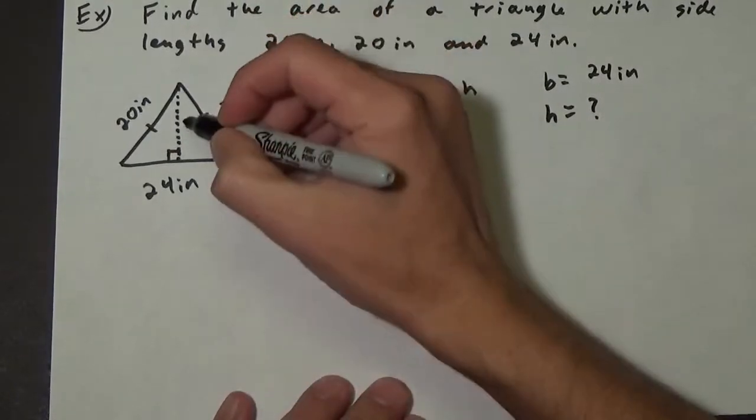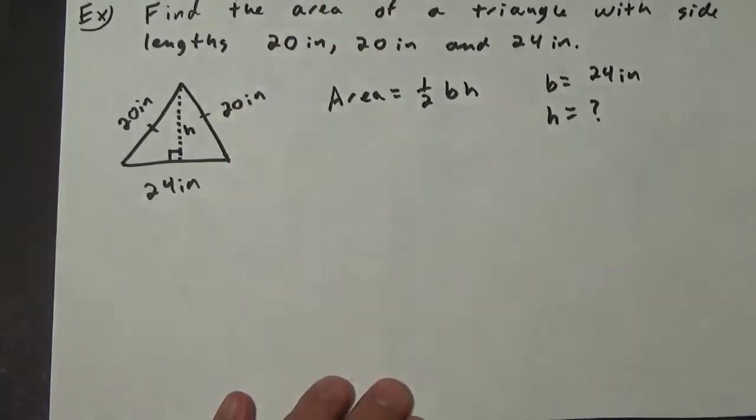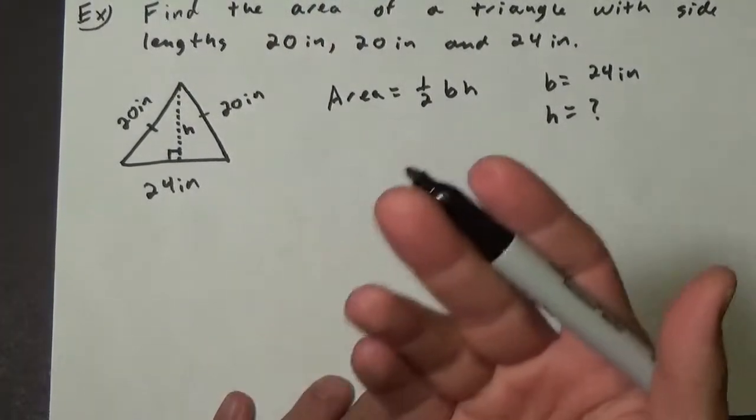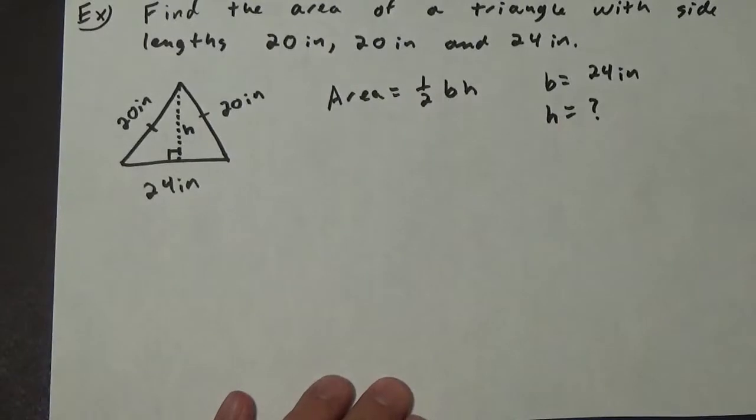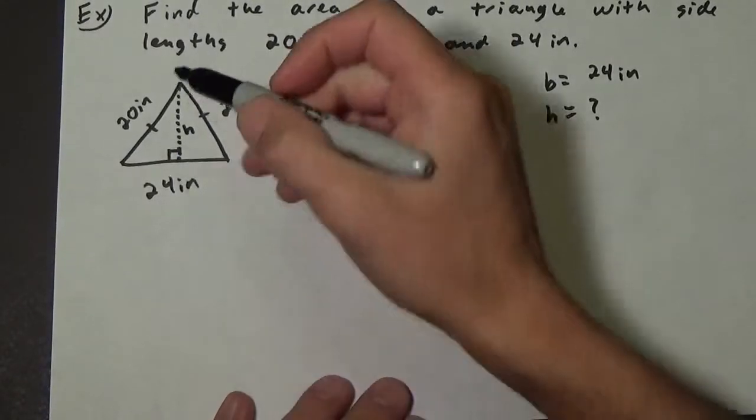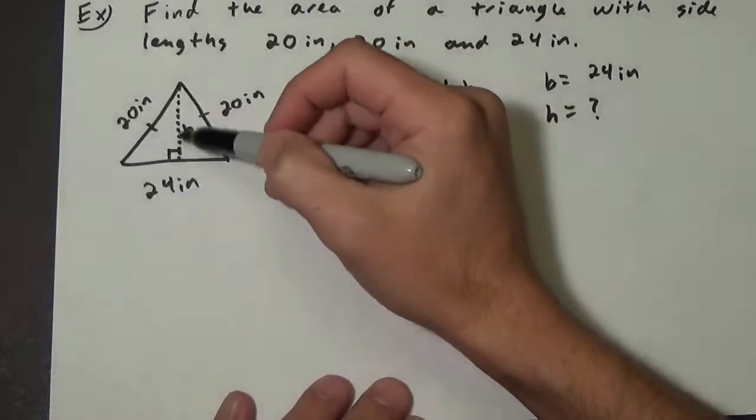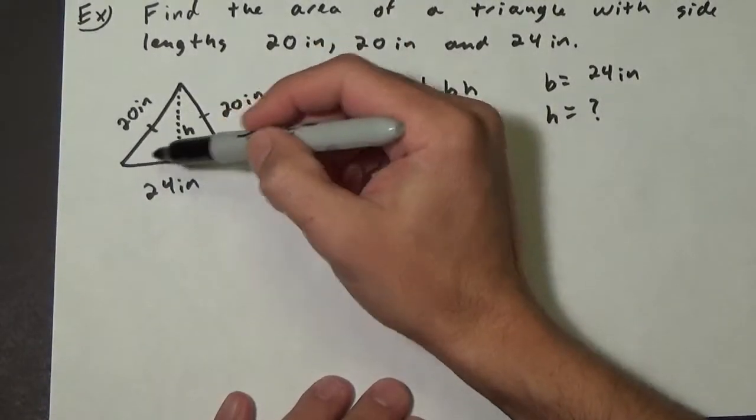this was a theorem back in geometry that says if you have the altitude of an isosceles triangle, it is also the median. So the altitude